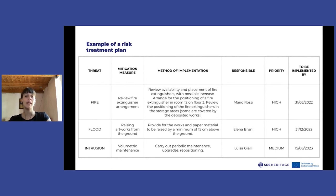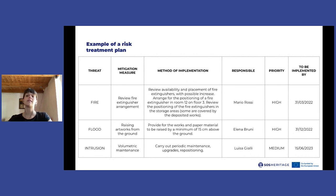The risk treatment plan document includes all the vulnerabilities found during the preliminary analysis, and for each of them the mitigation measures to be activated are indicated in hierarchical order from the most urgent to the least urgent. This document is very useful because it serves as a starting point for the institution to plan all the risk mitigation activities, trying to balance the interventions with the real needs of the building and deferring investments over time.